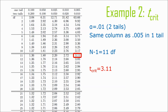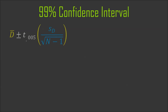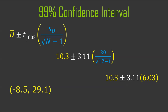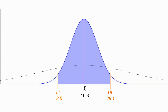Our t-critical turns out to be 3.11. So we've got the formula: d-bar plus or minus our t-score times our standard error. Plugging things in: the standard deviation of the difference scores is 20, d-bar is 10.3, sample size is 12, and the critical t to define the tails is 3.11. We calculate that out and should end up with something like negative 8.5 and 29.1. So the mean of all d-bars is 10.3, the lower limit is negative 8.5, and the upper limit is 29.1.